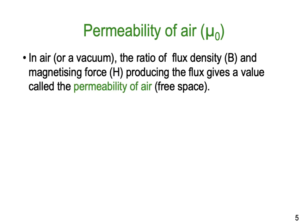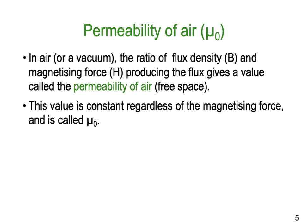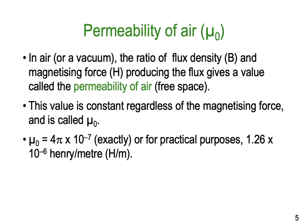The permeability of air — we're going to use mu zero — because that's the worst possible case where there's absolutely nothing possibly conducting the magnetic field; it's just driving through the air or a vacuum. So in air or a vacuum, the ratio of the flux density B and the magnetizing force H producing a flux gives a value called the permeability of air, or you might hear it termed the permeability of free space. This value is constant regardless of the magnetizing force, so it's called mu zero. It never varies; it's always the same no matter where you are in the cosmos.